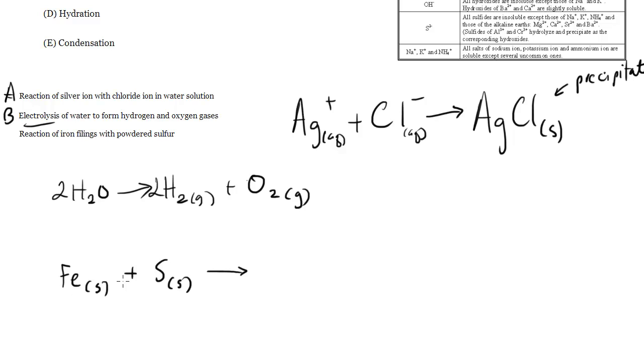Fe and S, they can combine together to form FeS, right? We imagine that this is a 2+ eventually, and that this would be a 2-, so they'll combine in a 1 to 1 ratio. And what happens is, in order for this to happen, this guy's 2 electrons are going to have to be transferred to the S, right? It's going to make this 2+ and this 2-, so it's a full transfer of electrons, and then therefore they're going to link with an ionic bond.